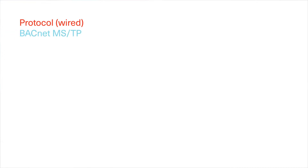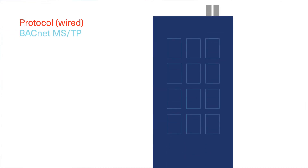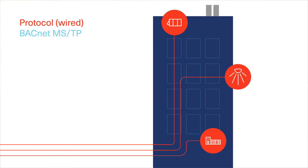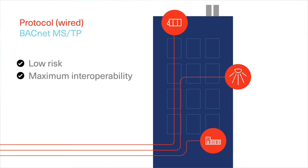BACnet can run on a wired or wireless medium. One wired option is BACnet over MSTP. Here, your HVAC provider pulls wire between equipment controllers to create an HVAC network. Consider this when you want something low-risk that's commonly used in the market, or if your budget calls for a lower cost option.